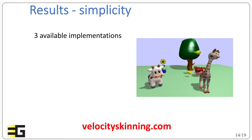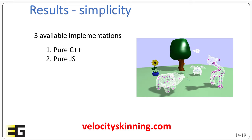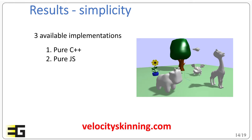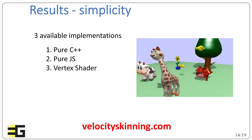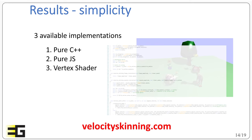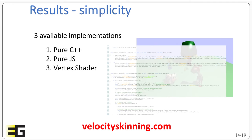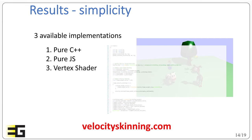One of the main advantages of the approach is its simplicity. As it is simple to implement, we propose three open implementations. A basic one in pure C++, a demonstration that works on a browser, where the deformation is fully encoded in JavaScript and it remains real-time, and an implementation in a vertex shader. Note that it all fits in a single-pass vertex shader. And all these implementations can be found in velocityskinning.com, so don't hesitate to check it out.